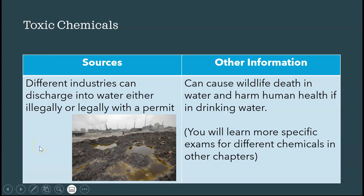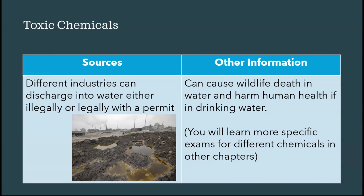The next type is toxic chemical pollution. Different industries can discharge chemicals illegally into water — movies like Erin Brockovich and A Civil Action were made about this. The Clean Water Act forbids discharging into water bodies without a permit, so it can happen legally with a permit or illegally without. Since permits cost money, many industries choose illegal dumping as the cheapest way to dispose of toxic waste.